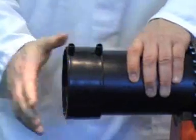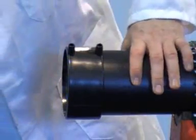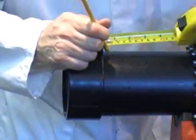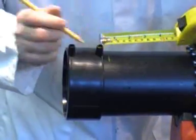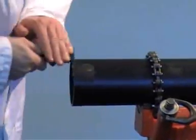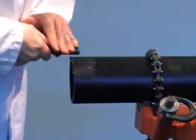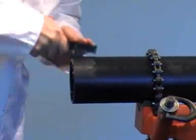Push the fitting fully home onto the pipe and mark 10mm from the end of the fitting. Scrape the outer surface of the pipe up to and including the mark. Make sure that all the swarf produced is removed.